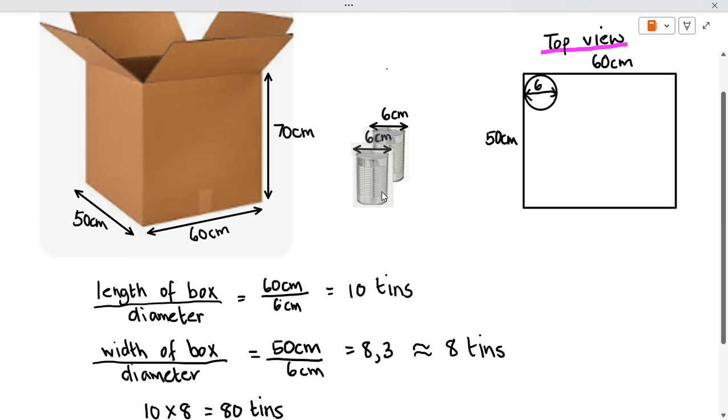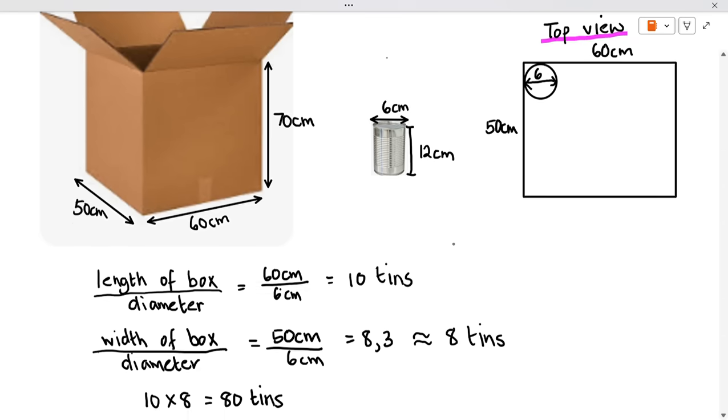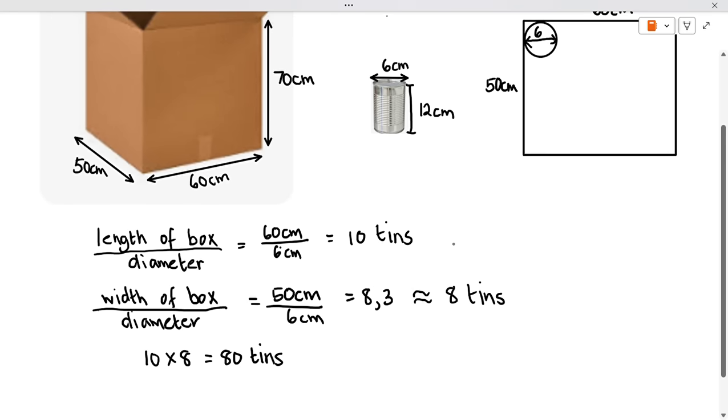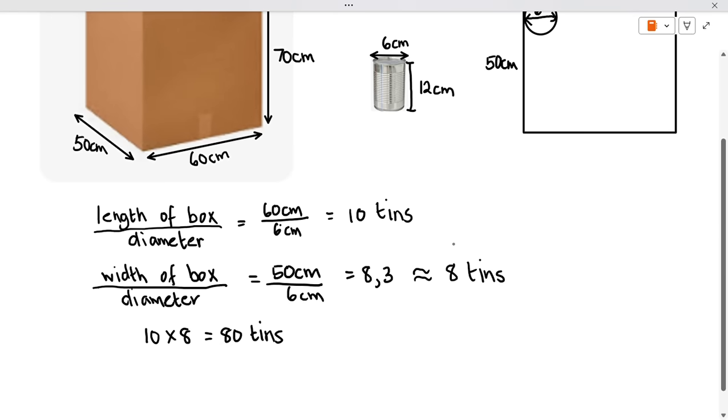I haven't given this tin a height, so I'm going to say if this tin is 12 centimeters here, and I want to know how many tins are going to fit one on top of the other vertically, I'm going to say height of the box divided by the height of the tin.